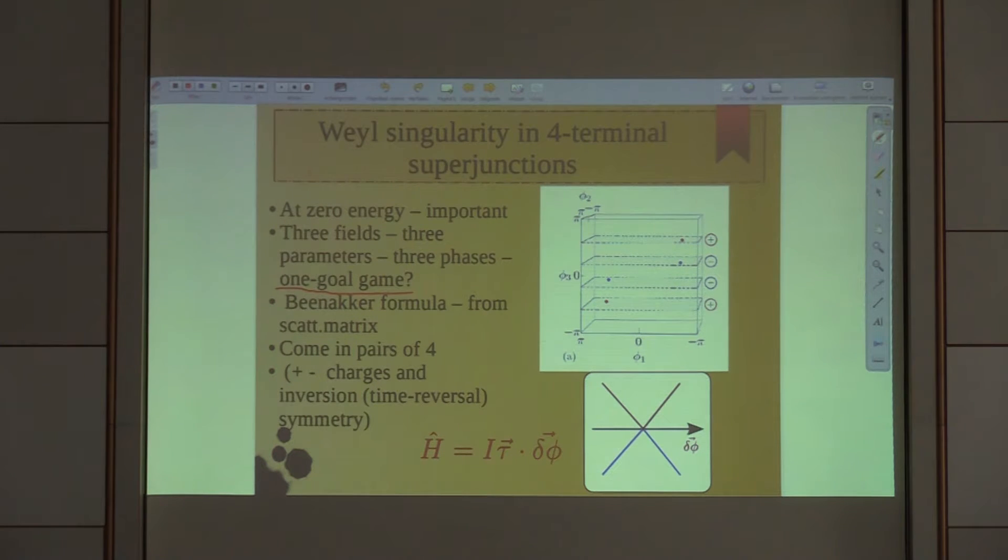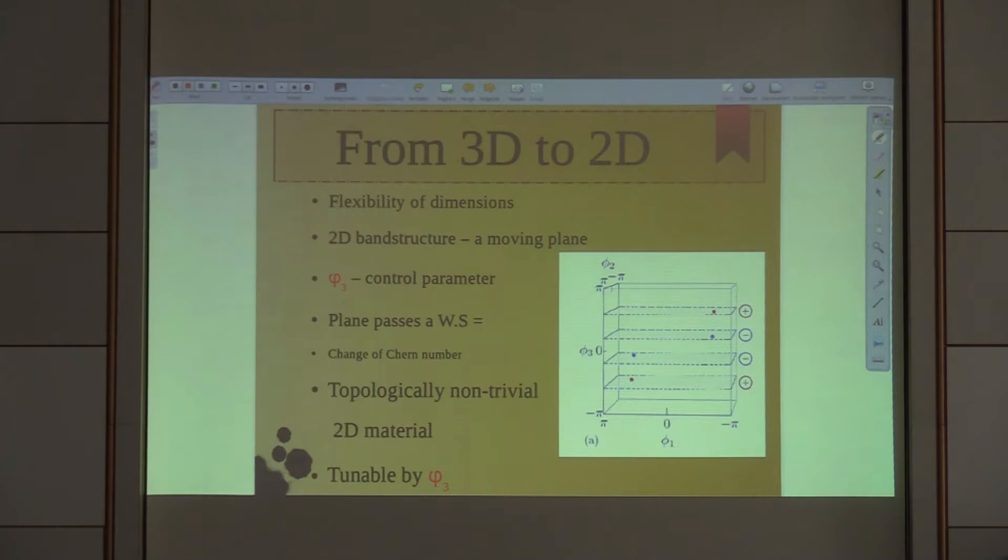If I change the time, I will change the sign of all phase differences, so it's equivalent to inversion symmetry. I have four points, I have conical spectrum near each point.